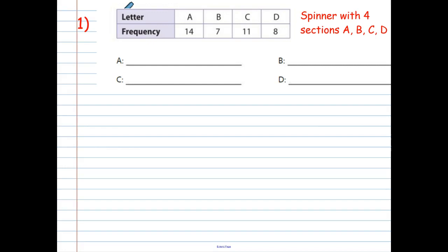So this represents a spinner with four sections labeled A, B, C, and D. And if you really want to, you can draw yourself a little spinner here. A, B, C, and D. But it actually doesn't tell us that all the spaces are the same size. We don't really know.